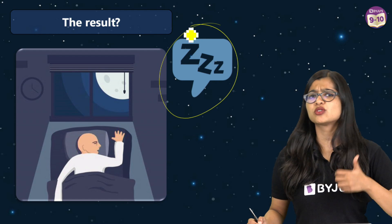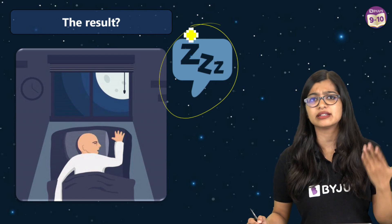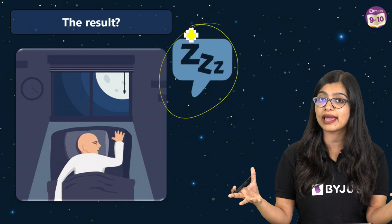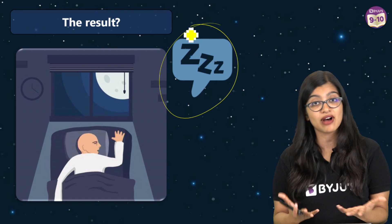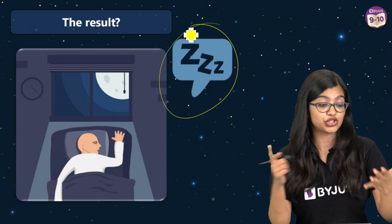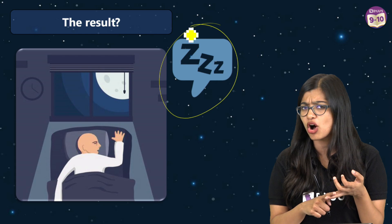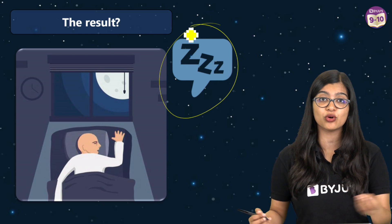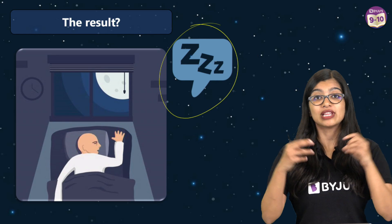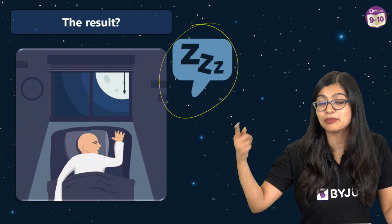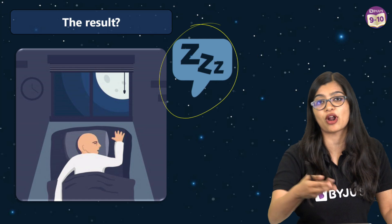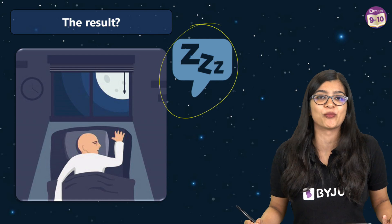It is recommended that during the night, maybe two hours before going to sleep, you can dim down the lights. It's also advised that when you're about to sleep, do not use any devices such as your mobile phones, laptops, or tablets. Now you know the reason: light can affect the production of melatonin, which is your sleep hormone.